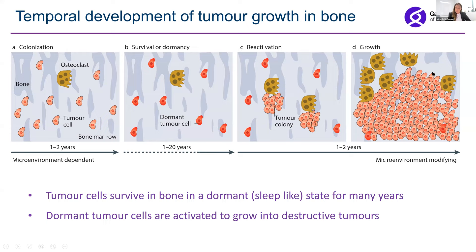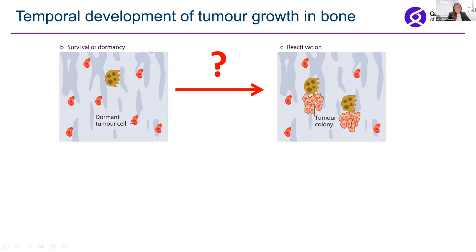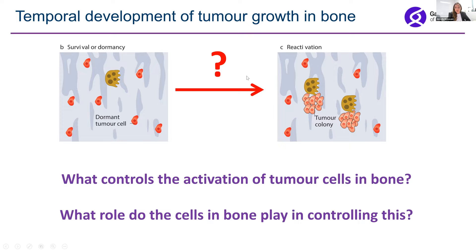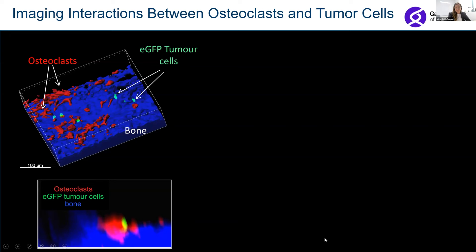The key question we're trying to answer in our group is: what is it that's waking these dormant tumor cells up? If we can understand this better, we might be able to stop it from happening. In particular, our group has been focusing on what role the cells that live in bones — such as osteoclasts — play in controlling these processes.